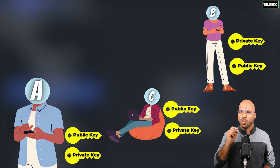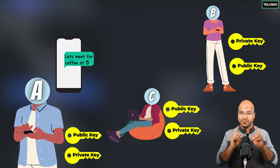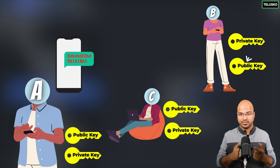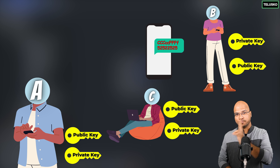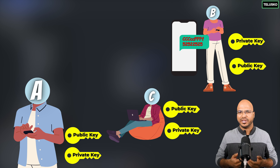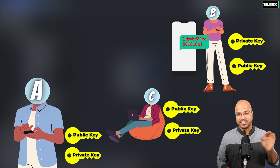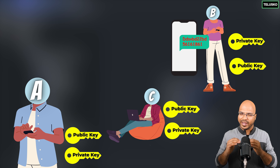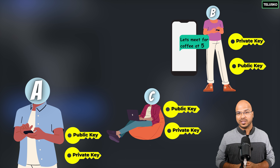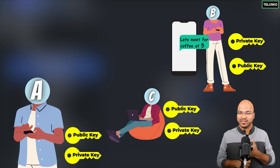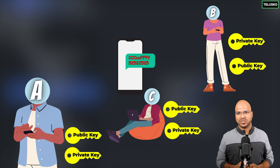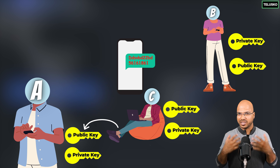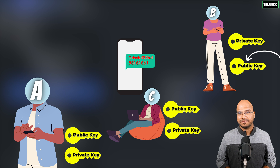The solution is double encryption. When A wants to send a message to B, A first encrypts with B's public key — first layer done. Then the same packet is encrypted again with A's private key — double encryption. When the packet reaches B, B first decrypts with A's public key, proving A sent it. Then B decrypts again with B's own private key to read the message. We achieve both security and identity. If C intercepts, C can decrypt the outer layer with A's public key, but the inner layer is still encrypted with B's public key — and C has no idea what B's private key is. You're safe.